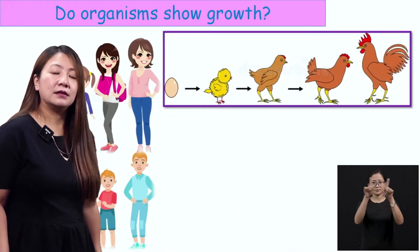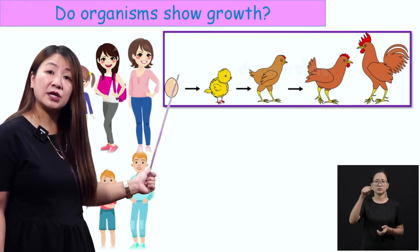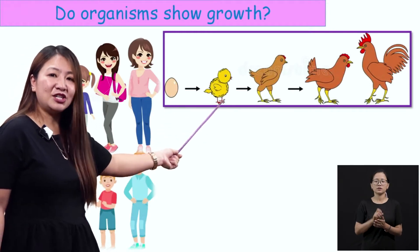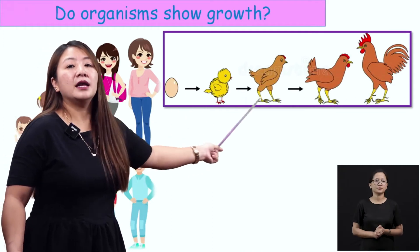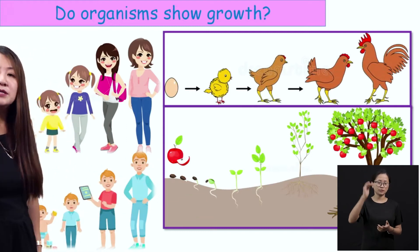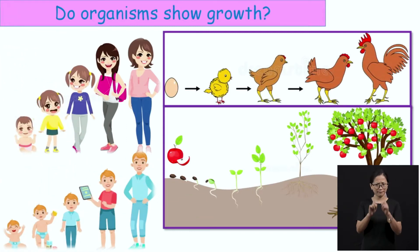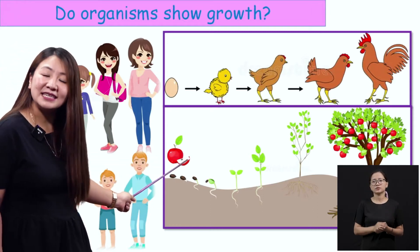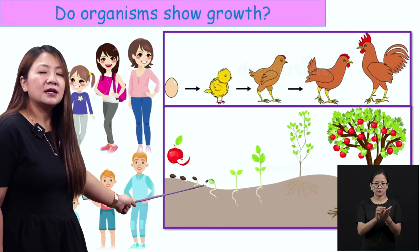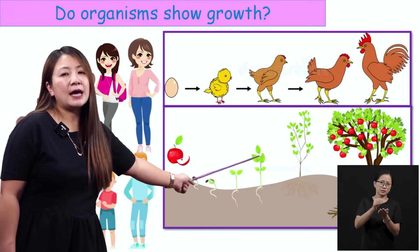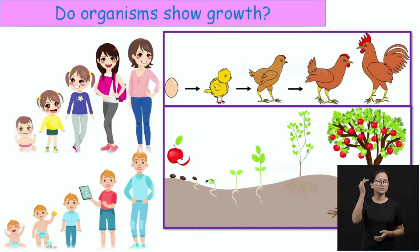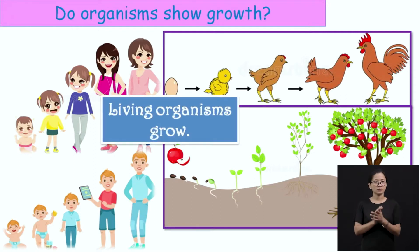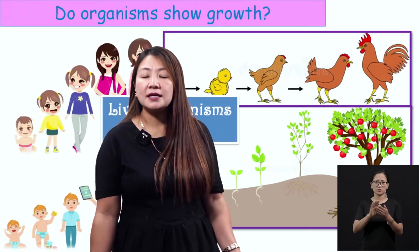And this hen, or a chicken — are they living? Yes, they are living, because they show growth. From the egg comes the chick, then the hen, and it becomes a rooster, a big hen. Animals also grow. What about the plants? Do plants grow? Yes — this is an apple, and an apple has seeds inside. You plant the seeds, from the small seed it'll germinate, give rise to a small plant or sapling, and then a tree, a mature tree where you get the fruits. So organisms show growth — that is the second characteristic.